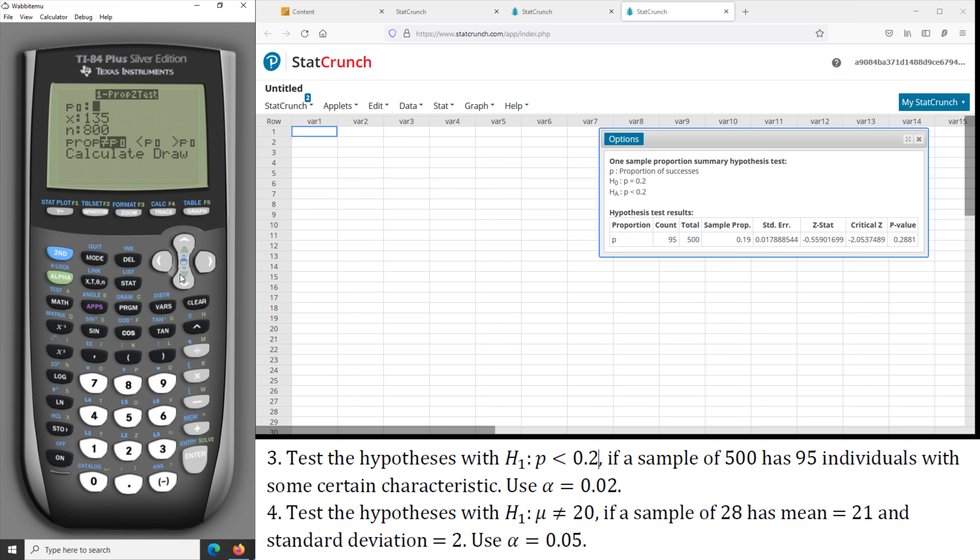And first it is less than 0.2, so we choose less than. P₀ is 0.2, and x is 95, n is 500, and we calculate. And as you see we have the same P-value of 0.2841, which is the same as what we have on StatCrunch.